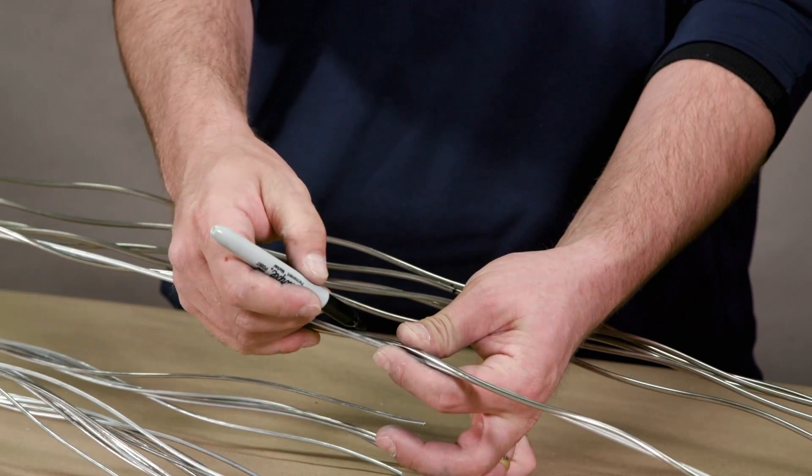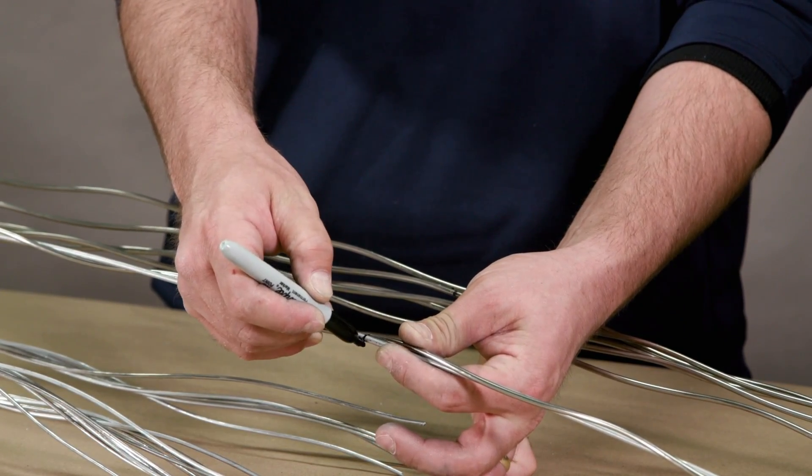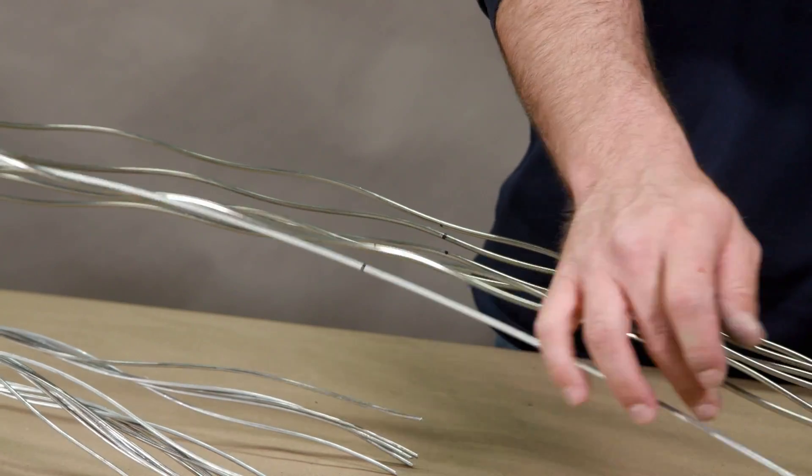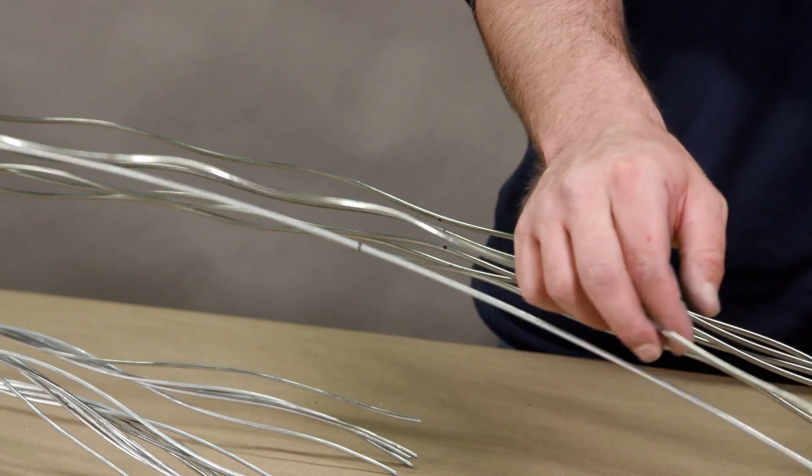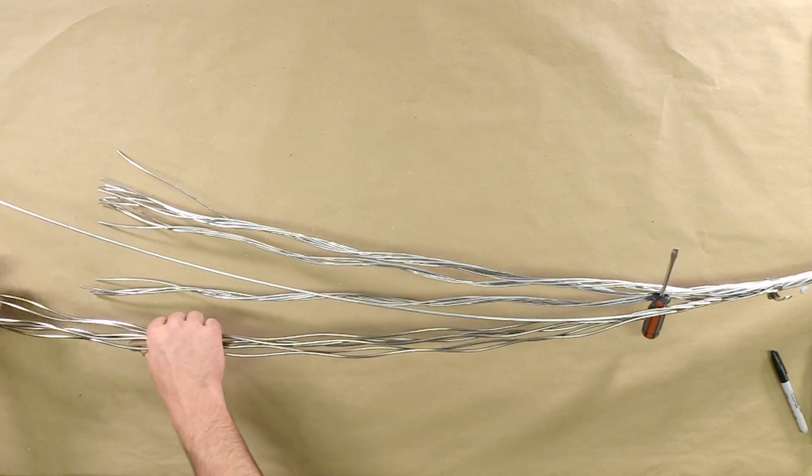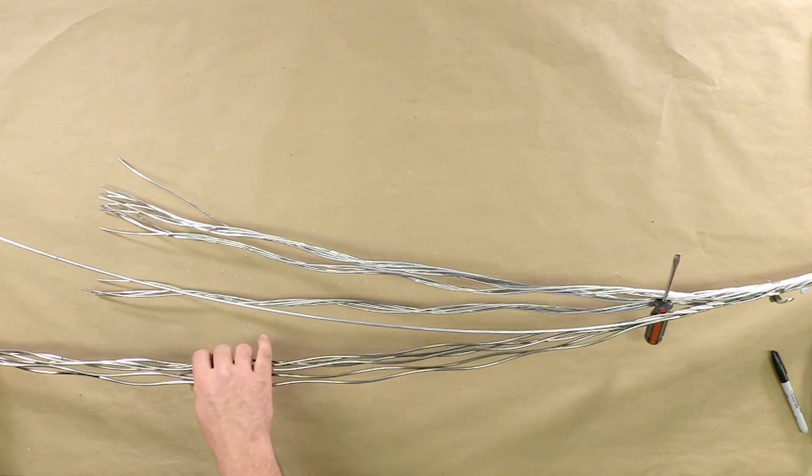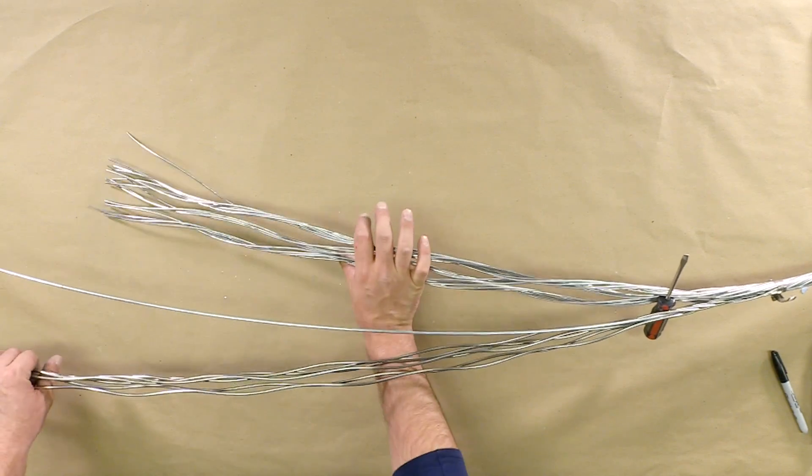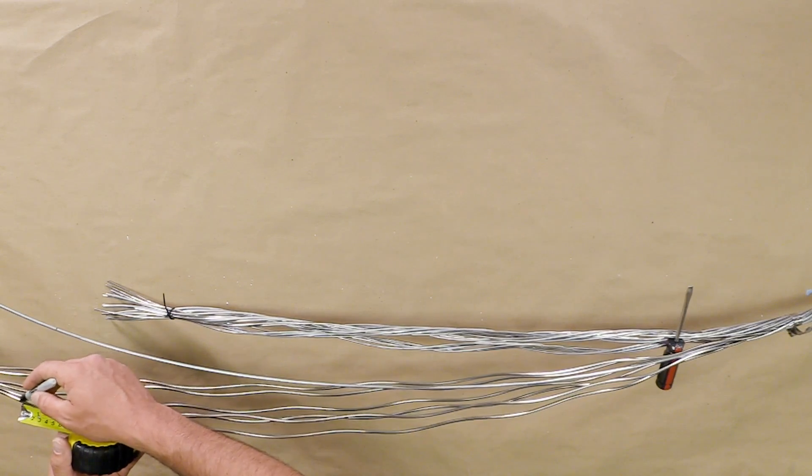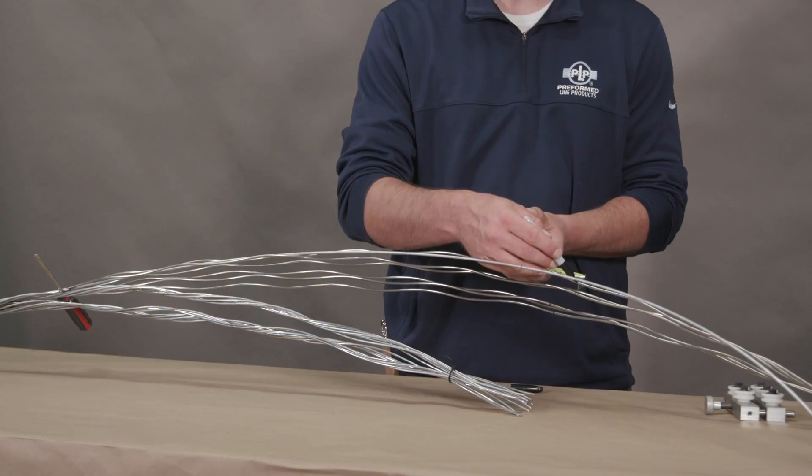Mark the center member at the original cut location. Mark each stainless steel buffer tube one and a half inches away from the original cut location towards the cut end.